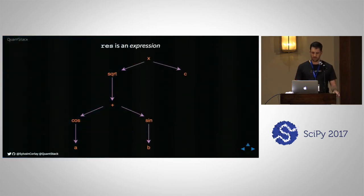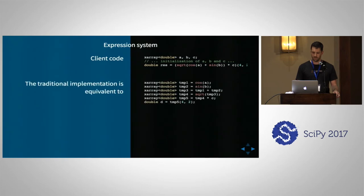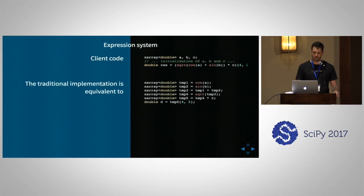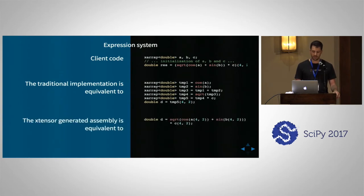At compile time, xtensor creates an expression tree corresponding to what you typed in the C++ code. So for the line `res = sqrt(cos(a) + sin(b) * c)`, the traditional implementation would compute all intermediary values, while xtensor's generated assembly corresponds exactly to the optimal code — computing the value of interest and only the value of interest.